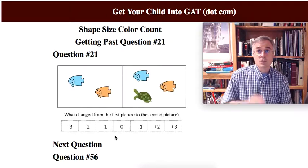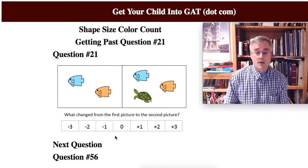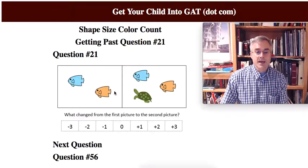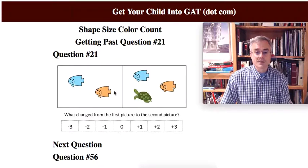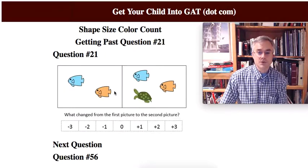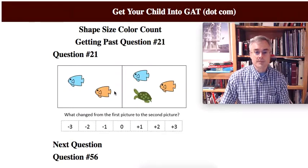So in Shape Size Color Count, which is pre-test prep, we start with the top part of the matrix and then hammer away nicely at the permutations until the child is ready to move on to more advanced test prep books. In this question we've got two fish in the left box and three fish in the right box. What changed?